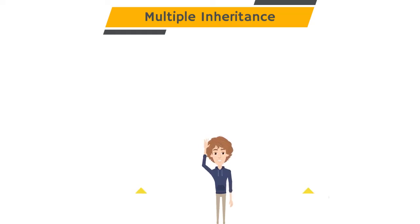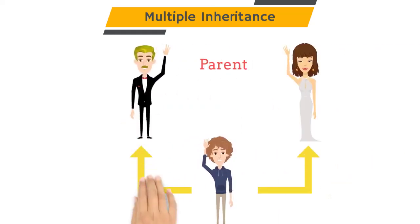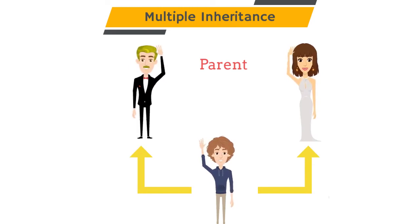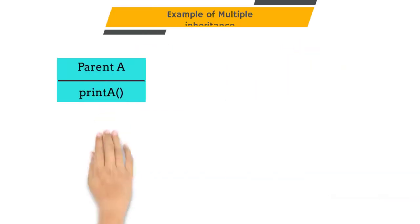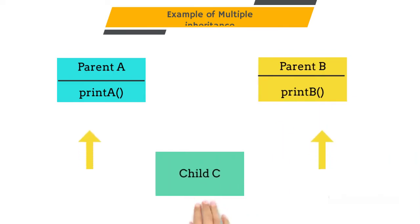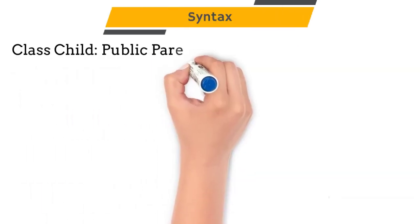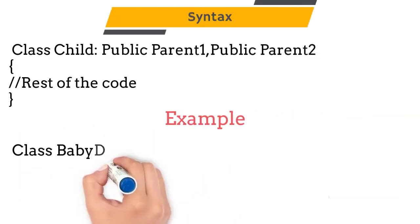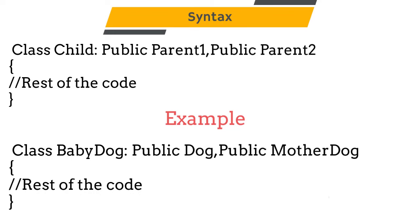The next type of inheritance is multiple inheritance. In this type, a child class inherits its property from multiple parents. If a class is inheriting its property from one or more parents, then the child class can access the property of both the parents. We will create a child class called C. C can access both the methods of the parent classes, which are printA and printB. If we want to inherit a child class from multiple parents, we just need to add the visibility and parent name separated by a comma. You can see the syntax on the screen.